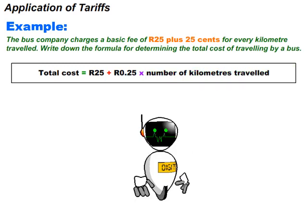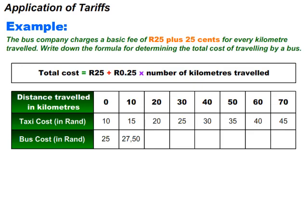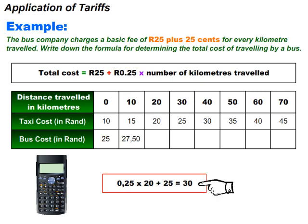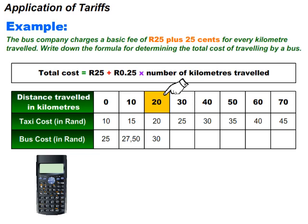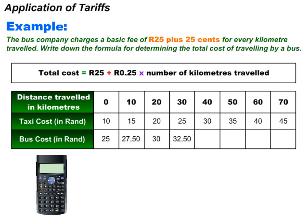Let us complete the table. To calculate the cost of using the bus after 20 kilometers, multiply 0.25 rand by 20 then add the 25 rand basic fee: 0.25 multiplied by 20 plus 25 is equal to 30 rand. For traveling 20 kilometers by bus you will pay 30 rand. After 30 kilometers the cost will be 32 rand and 50 cents, and after 40 kilometers the cost will be 35 rand.